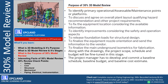Now let us talk about the purpose of 30% model review. The first purpose is to identify primary operational accessible maintenance points or platforms. The first agenda will be to finalize the location of equipment. If the operational team, construction team, and maintenance team sit together, they can look into the progress of the 3D model, see what kind of platforms are required, whether access is there, whether the operator can go, whether installation can be done or not. Those kinds of aspects will be discussed, and any gaps will be identified.